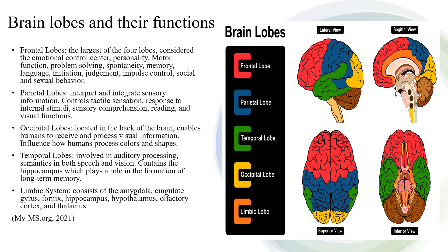The parietal lobes interpret and integrate sensory information. They control tactile sensation, response to internal stimuli, sensory comprehension, reading, and visual functions. The occipital lobes are located in the back of the brain and enable humans to receive and process visual information; they influence how humans process colors and shapes. The temporal lobes are involved in auditory processing and semantics in both speech and vision.